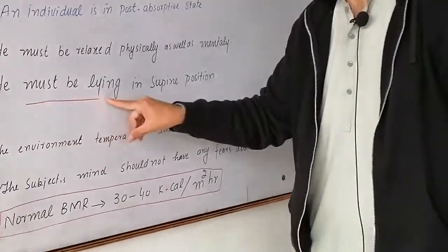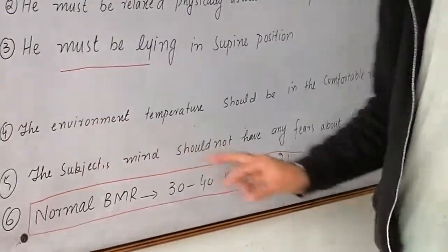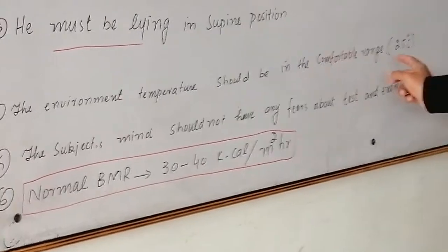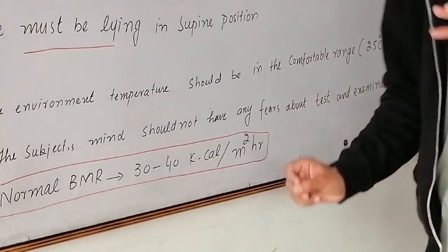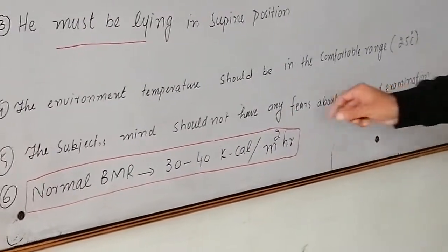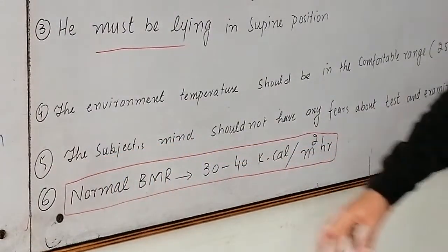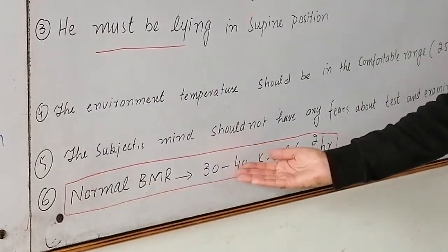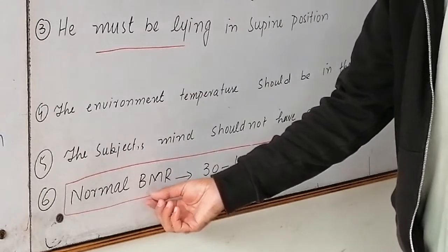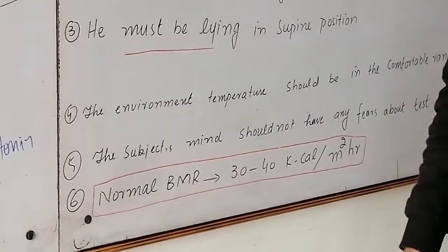Fifth condition: the subject's mind should not have any fear about test and examination. Sixth: normal BMR values. These are the main regulators: T3 and T4 regulate BMR. That is the basic function of T3 and T4. So thank you very much.